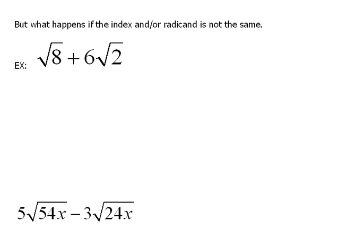Alright, so we've seen that we can add and combine radicals as long as the radicand and the index is the same. But what happens if that's not true?